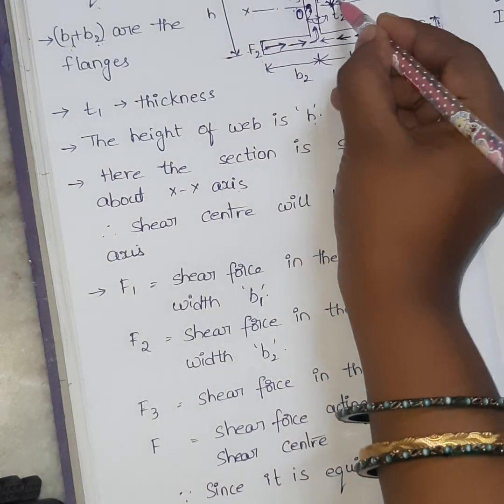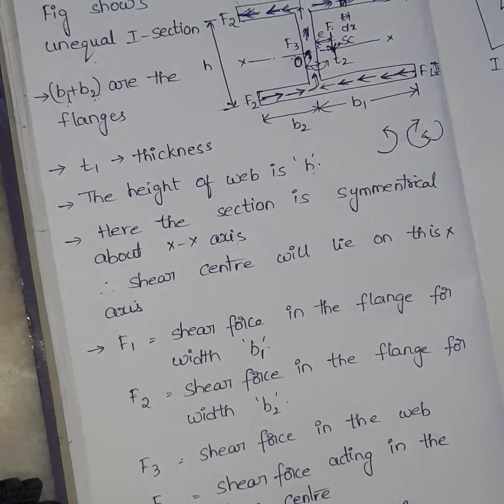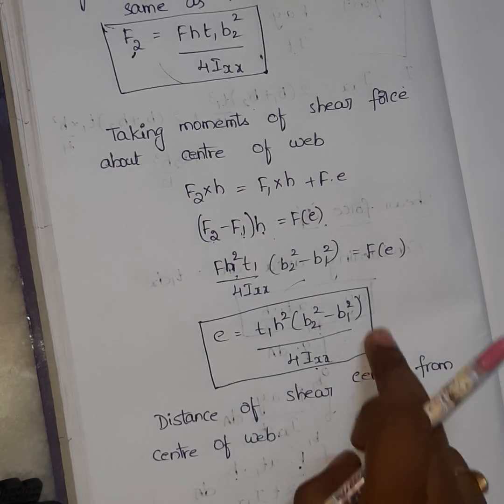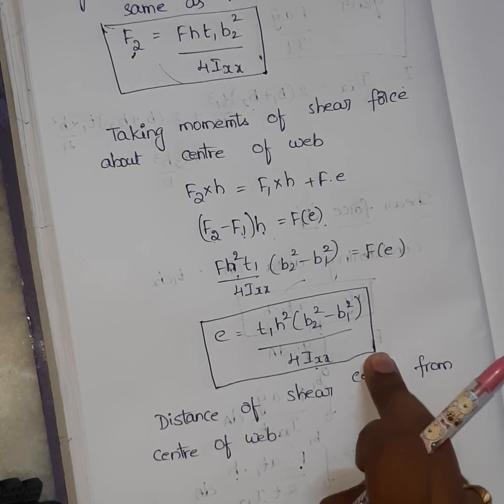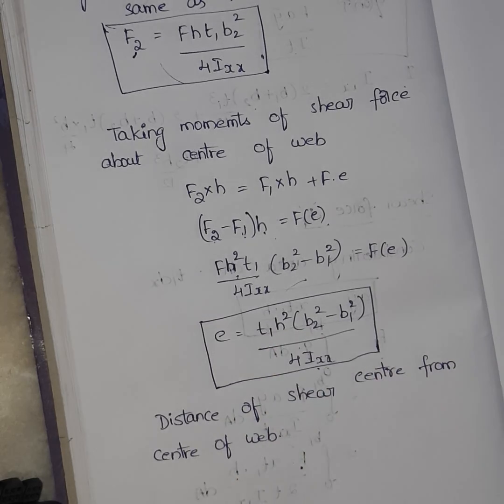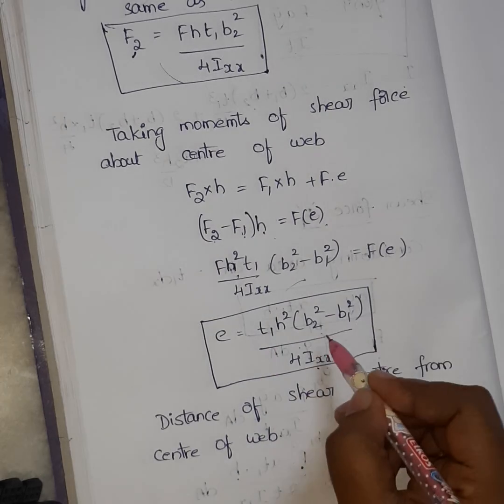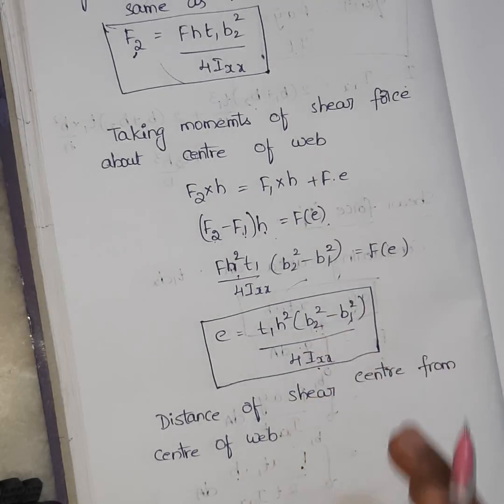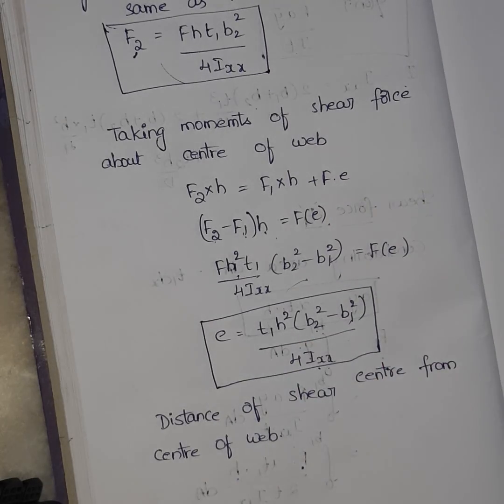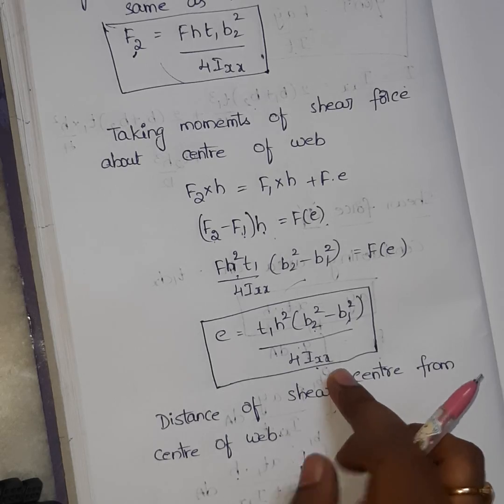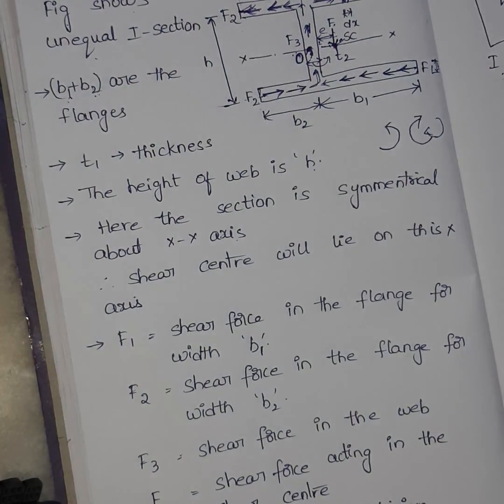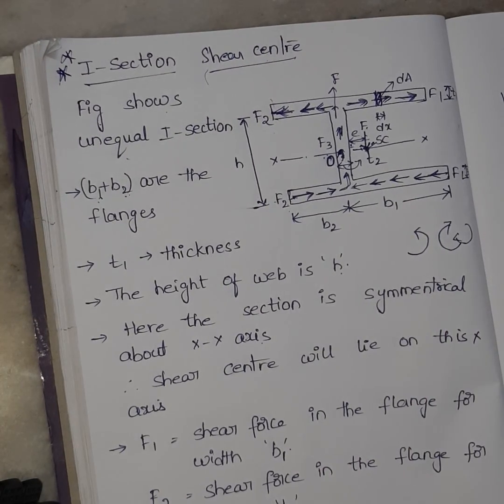So this is my distance of shear center. So in a problem, when you need to calculate the shear center position, by using this formula we will calculate. If T1 thickness is the same for both flanges, and if B2 equals B1, you can directly write B square. But if widths are different, then this is B2 square minus B1 square by 4IXX. Okay, this is a very very important derivation. It took a long time, but this is very important derivation. So please learn this derivation. It will be helpful for your exams. Thank you for watching.